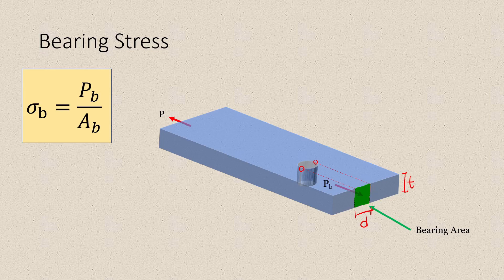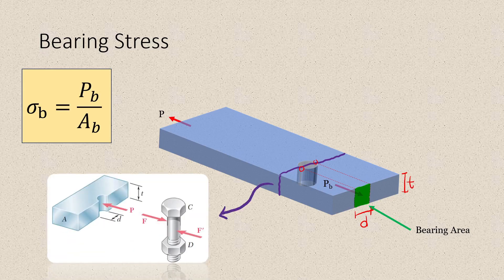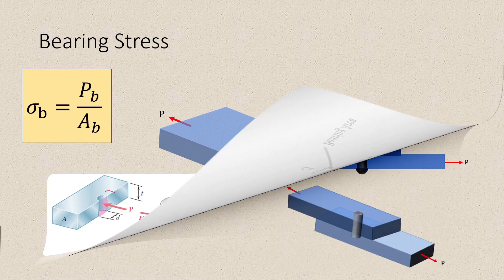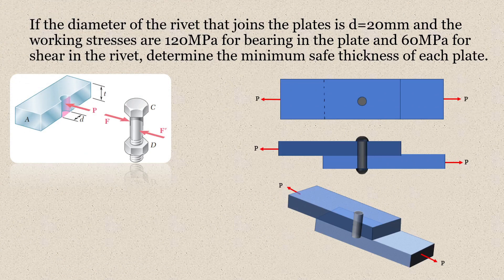To better understand this area, let's make a cut and isolate that section. Again, this is our diameter and this is our thickness, and we'll consider the projected (pink) area. Now if the diameter of the rivet joining the plates is 20 mm and the working stresses are 120 MPa for bearing in the plate and 60 MPa for shear in the rivet, let's determine the minimum safe thickness of each plate. We have two considerations: bearing and shearing.